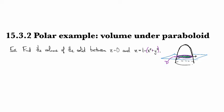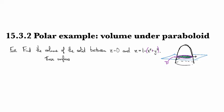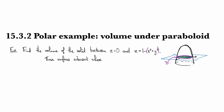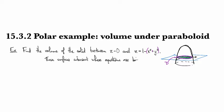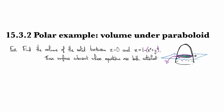Alright, so these surfaces, z equals zero and z equals one minus x squared plus y squared intersect, as usual, where the equations are both satisfied, and that amounts to basically substituting one into the other for what we have here.